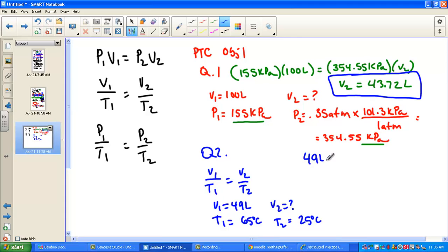So here we have V1, 49 liters set over T1. I have to convert 65 plus 273, and that's 338 Kelvin units. V1 over T1. What's the new volume when the temperature is 25 plus 273, which is 298 Kelvin units? We just simply cross multiply. Cross multiply the side that does not have the variable first. So key sequence, 49 times 298 divided by 338 Kelvin. And the new volume is 43.2 liters.